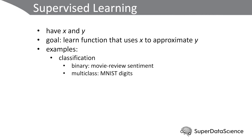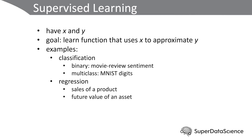So binary classification has two classes, like movie review sentiment. Multi-class problems have more than two classes. To contrast with classification problems, there are regression problems. These are still supervised learning problems, but instead of trying to predict a particular class, with regression we're predicting a particular value.